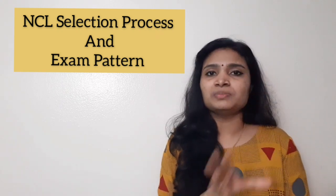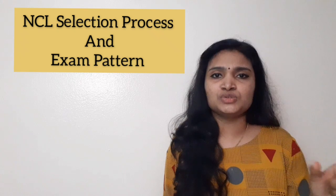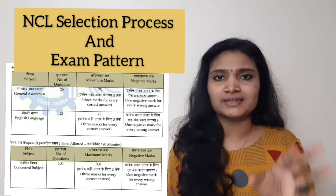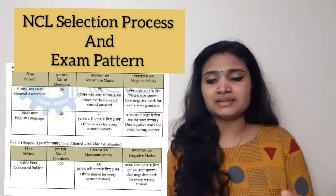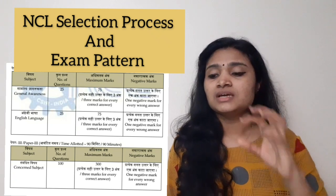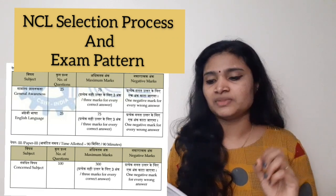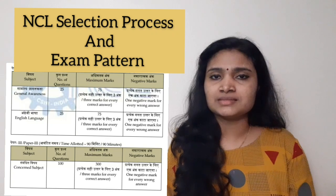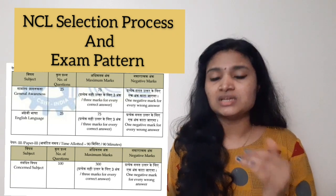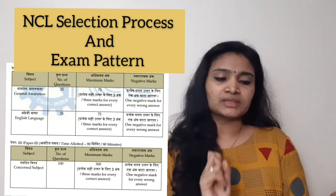Only if you qualify Paper 1 will Papers 2 and 3 be examined, and the final selection is based on those marks. Paper 2 for Technical Assistant also has two sessions: General Awareness with 25 questions and 75 marks, and English with 25 questions and 75 marks — totalling 50 questions and 150 marks. Three marks are awarded per correct answer, one mark is deducted for wrong answers, and the time duration is 30 minutes.